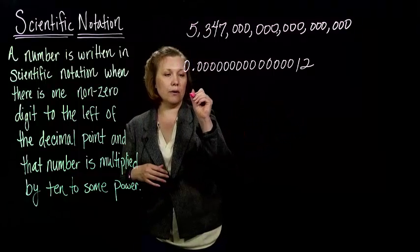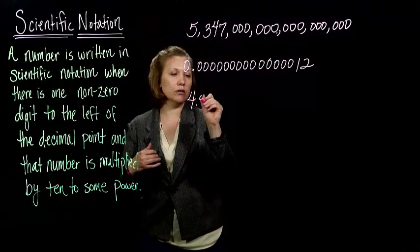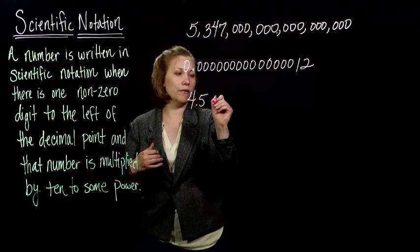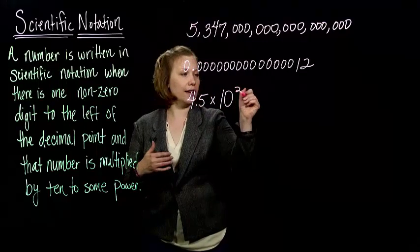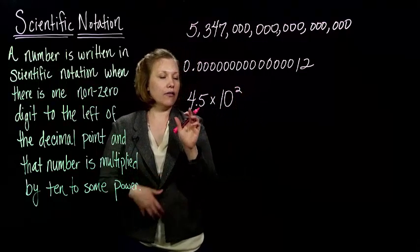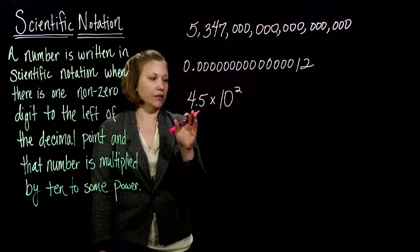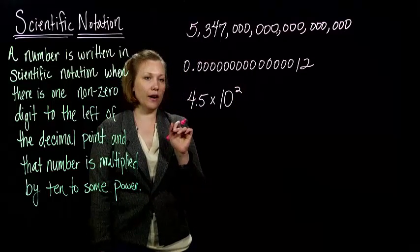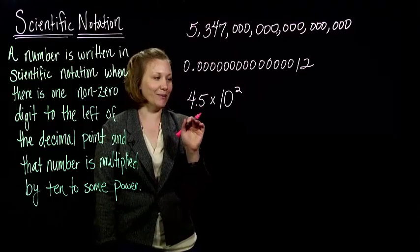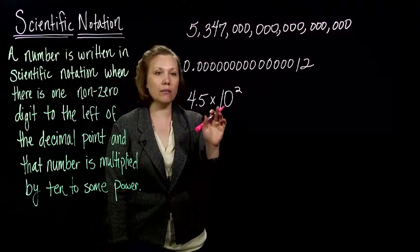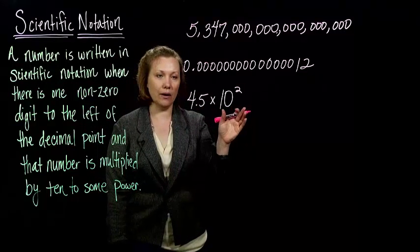For example, if I gave you 4.5 times 10 to the second — I've got one non-zero digit in front of the decimal point, and I've got it multiplied by 10 to some power.